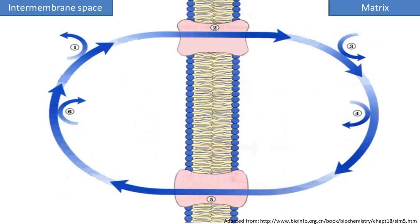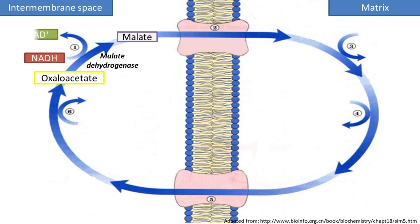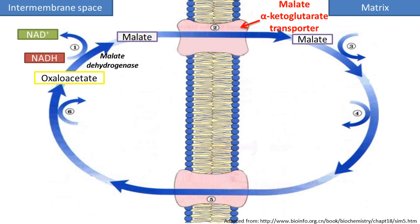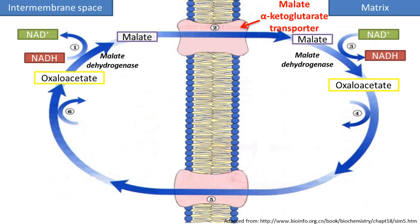The third transport system is the malate-aspartate shuttle. This system transports NADH from the cytosol into the matrix. Oxaloacetate, an intermediate in the TCA cycle, is converted to malate. This is facilitated by malate dehydrogenase and converts NADH to NAD+. Malate then moves through the membrane via the malate-alpha-ketoglutarate transporter into the matrix and gets converted back to oxaloacetate, reproducing NADH. This is how electrons from NADH are transported into the mitochondria.